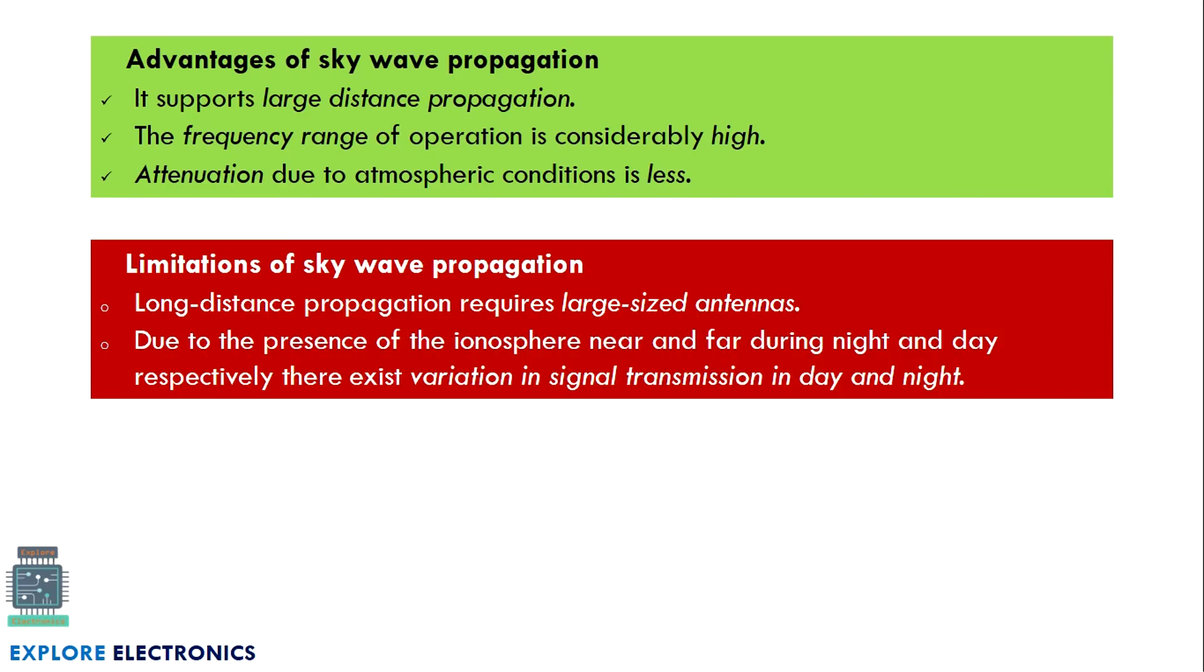The limitation is that long distance propagation requires large sized antennas with significant height. Due to the presence of ionosphere near and far during night and day - during night ionosphere is near to earth, and in daytime it is far - signal variation in transmission occurs between day and night transmission.